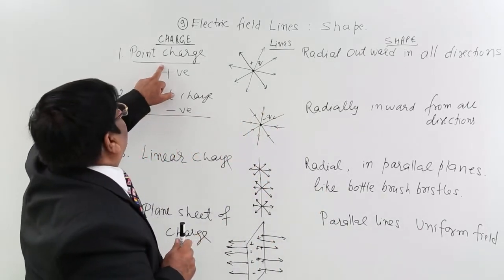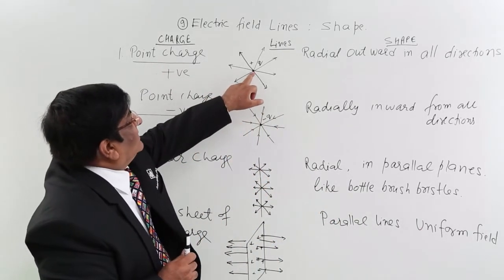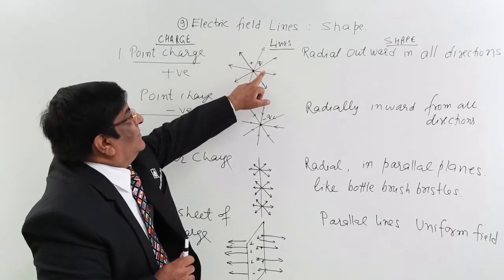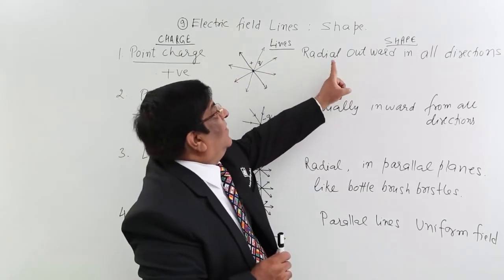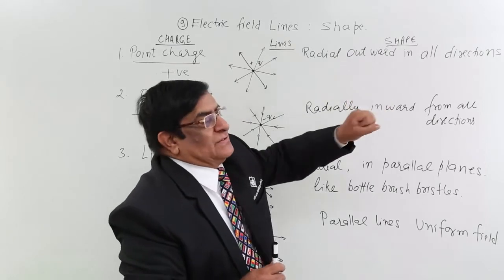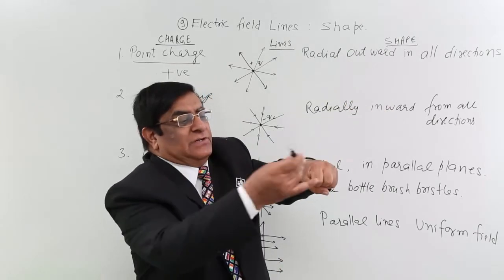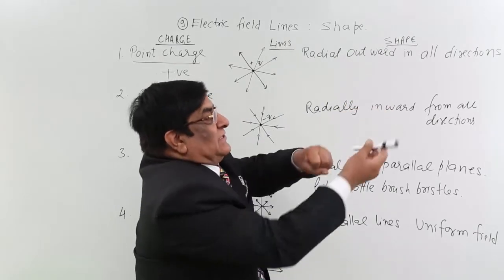First we will take if it is a point charge and it is positive. Then the shape will be radially outward in all directions. In this direction, in this direction, in this direction, in this.